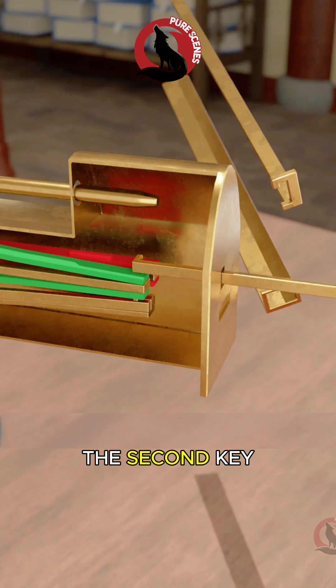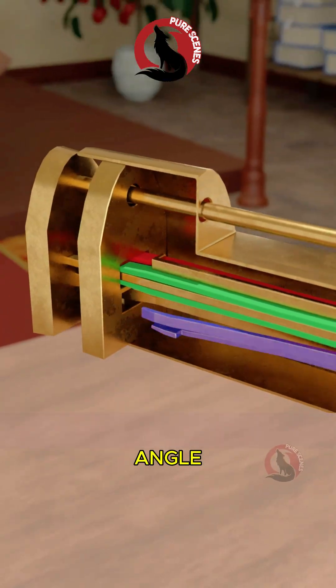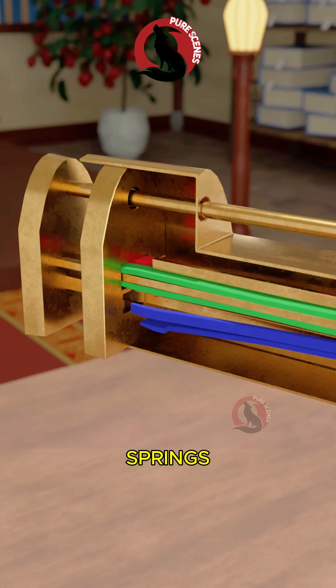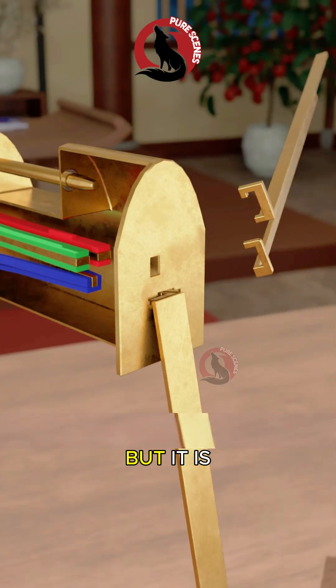Step two, the second key is then inserted into the upper keyhole at a precise angle. This compresses the second group of springs, letting the bolt slide further, but it is still blocked.